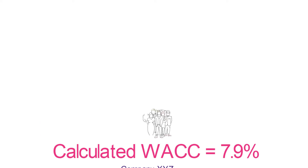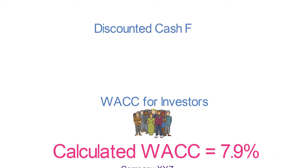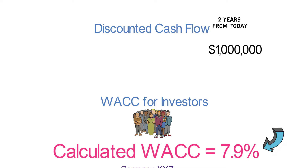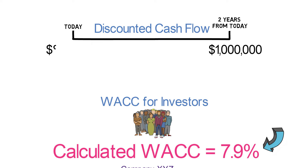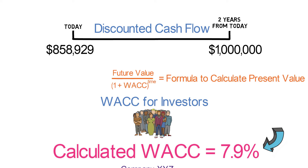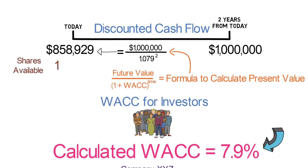Another good use of WACC is to use it as a discount factor in discounted cash flow or some similar valuation technique, and it works very similarly to the way a company would use it. Using the WACC we calculated of 7.9%, we can use that number to discount expected cash flows to see what they're worth today. So if cash flows are expected to be $1 million in two years for a company we are considering investing in today, that $1 million in two years is worth $858,929 today. Let's pretend that the company has 10,000 shares outstanding — divide this by 10,000 and you get a present value of $85.89 per share.